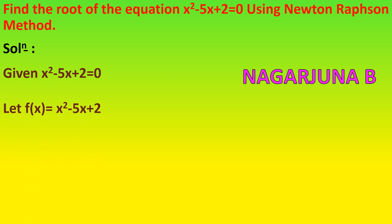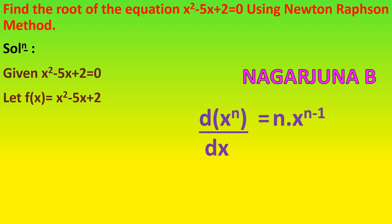Therefore, let f of x equals x squared minus 5x plus 2. Next, we need to find the differentiation of this equation. For differentiation, you need to know the formula: differentiation of x to the power n with respect to x equals n into x to the power n minus 1. So now we shall find f dash of x, which is 2x minus 5.